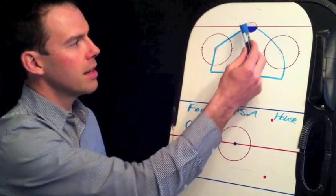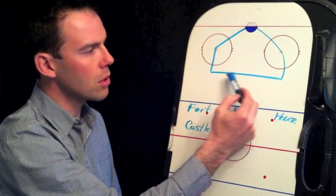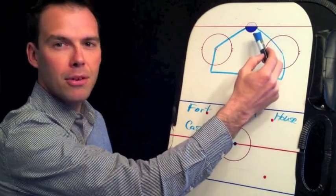In the defensive zone is the area from the post to the dot, just above the circle, and the same thing on the other side.